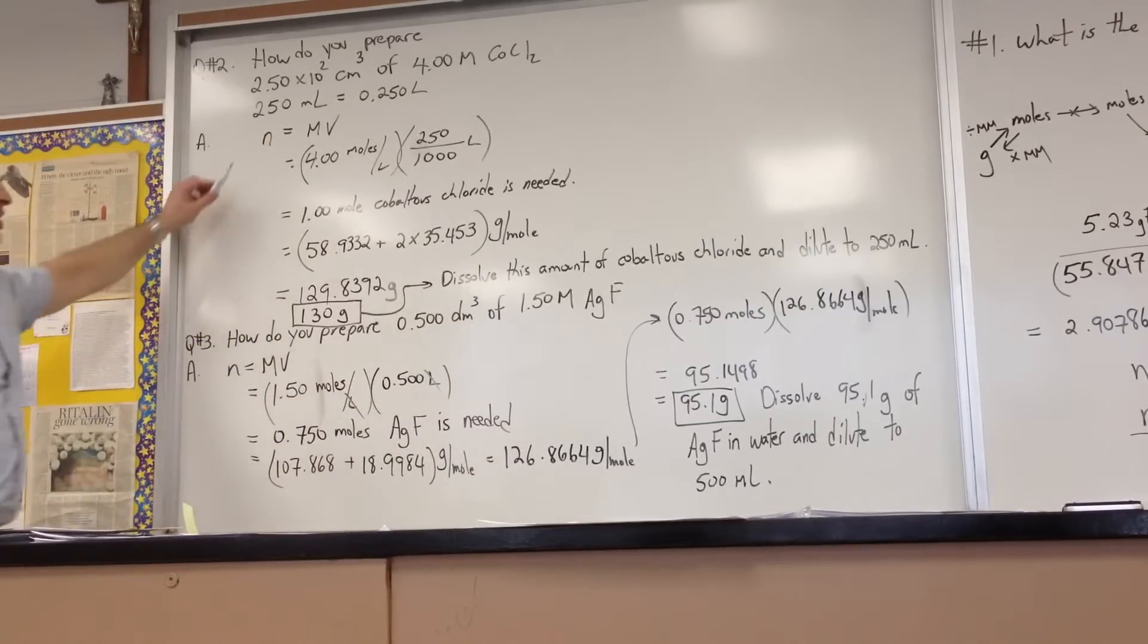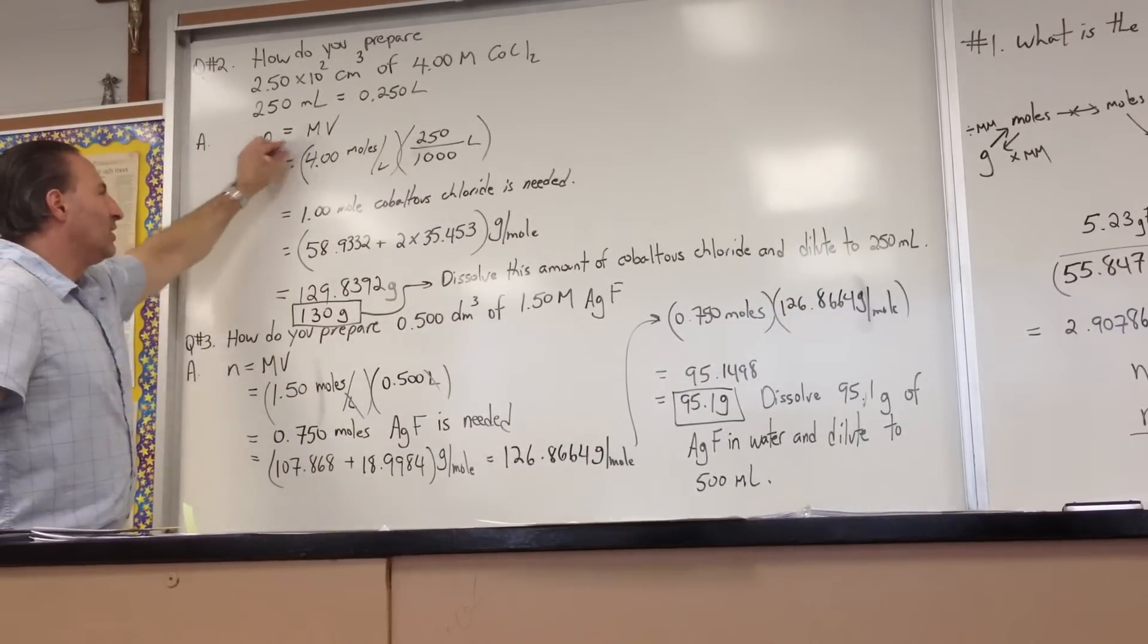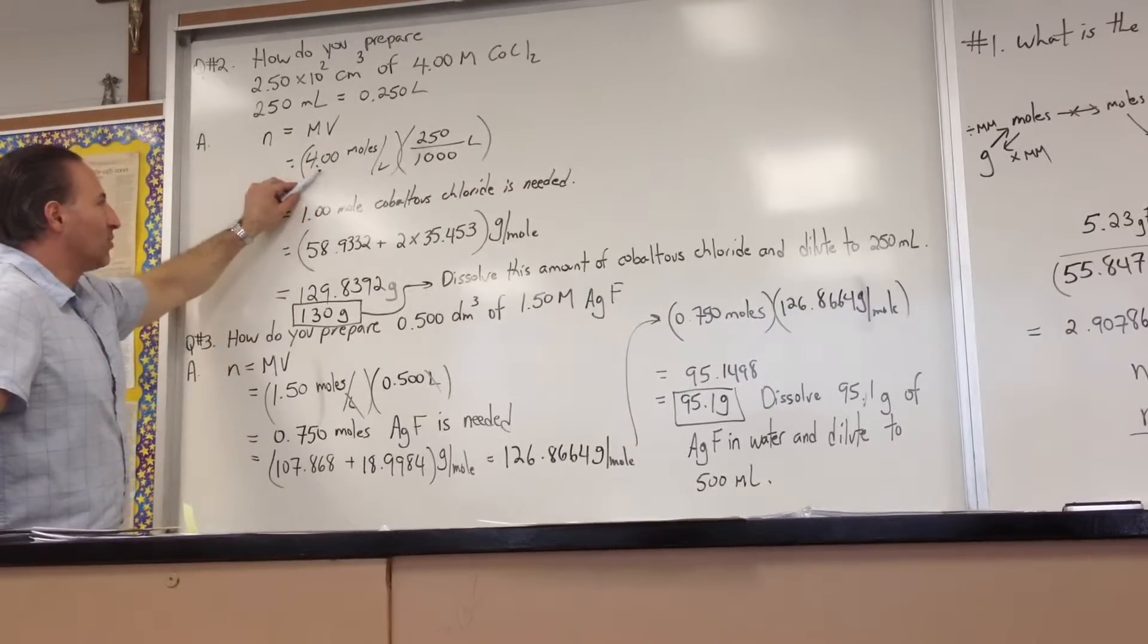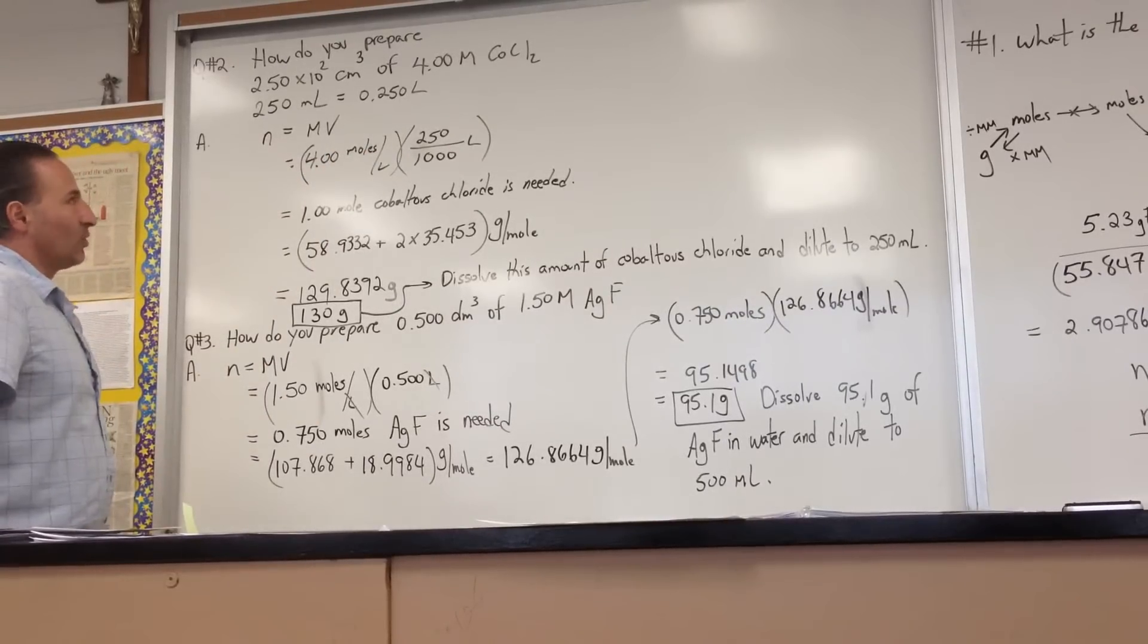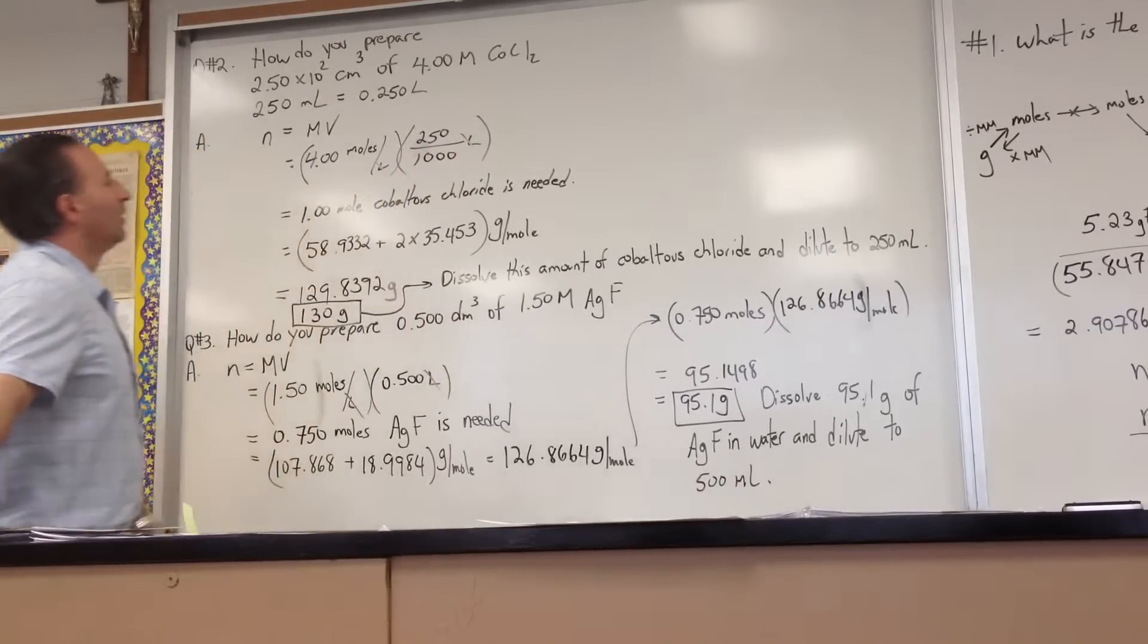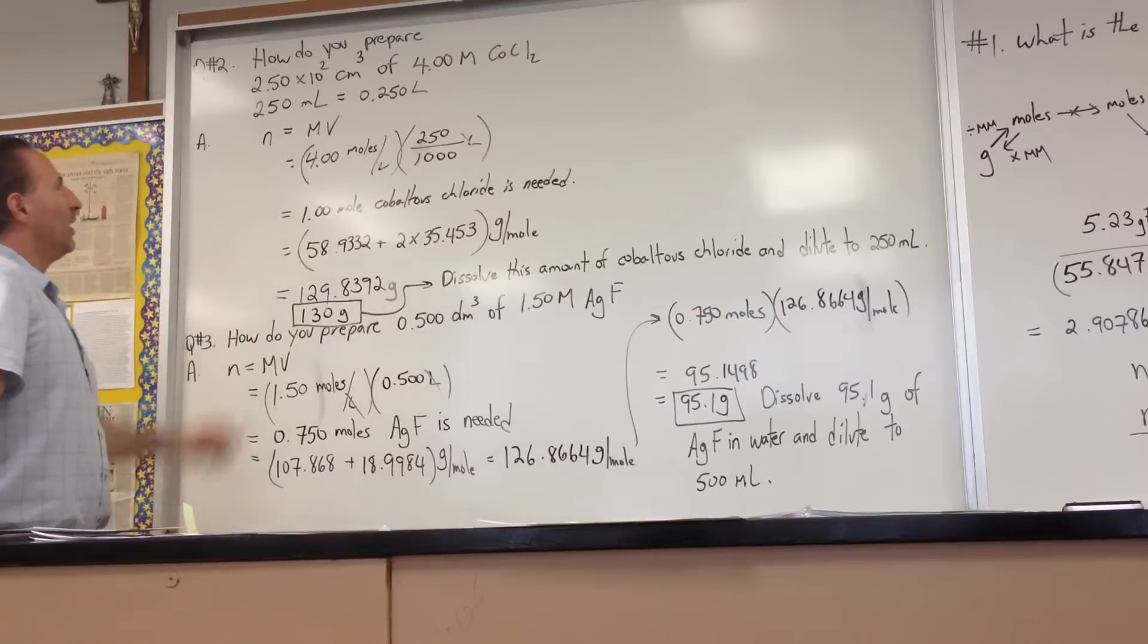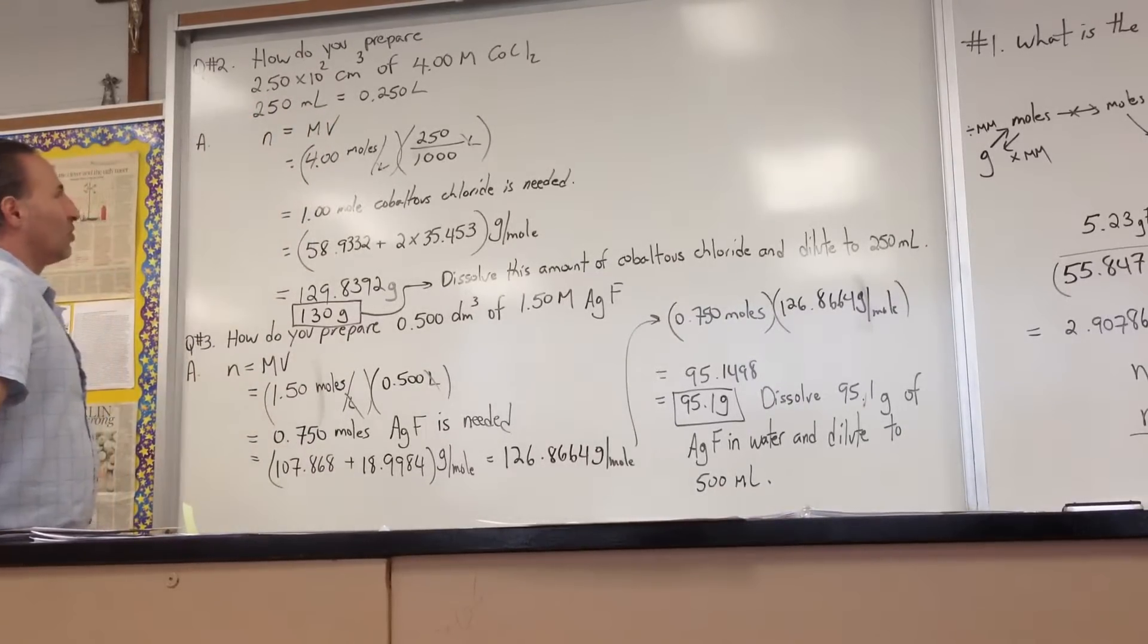We're going to plug it into the equation that says the number of moles of substance is equal to the molarity times the volume. The units of molarity are in moles per liter. It's a 4 molar solution. There's 250 one thousandths of a liter, or 0.25 of a liter. Liters will cancel, and we're left with an answer in moles. You need one mole of cobaltis chloride to prepare a solution that is 4 molar and that you only have one quarter liter of.